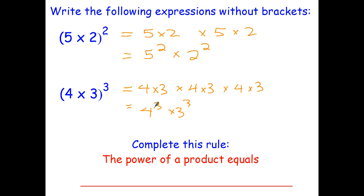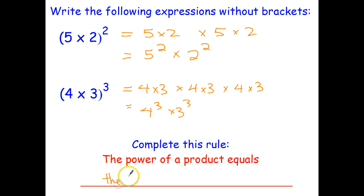How can we express what we've just done in English? This is called the power of a product. This is called the product of the powers, because here we have two powers and we're multiplying them together. So in English, the power of a product equals the product of the powers. The concept is actually quite easy, but the English does make it sound a little bit complicated.